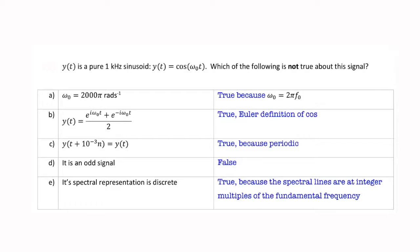In this question, we're trying to identify the statement that's not true about this signal.